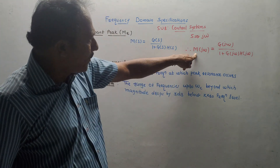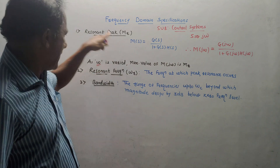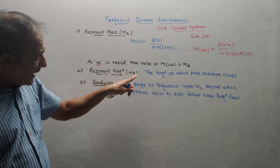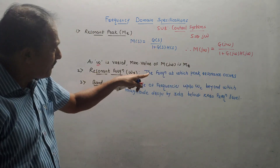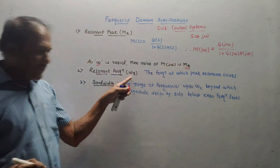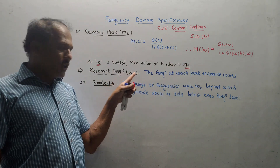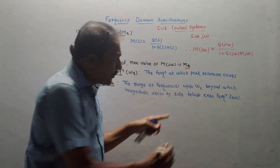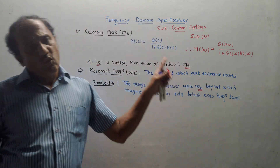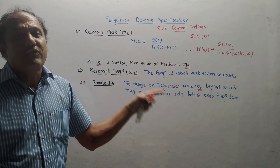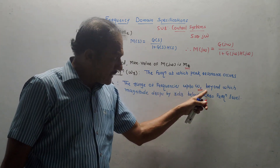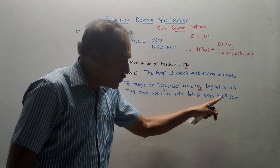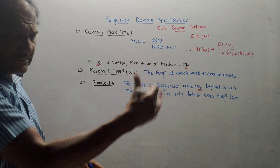Second is resonant frequency. It is the frequency omega at which peak resonance occurs — that means the frequency at which you are getting Mr. That corresponding frequency is called omega r, the resonant frequency. Third is the bandwidth. It is the range of frequency up to omega c. Omega c is called the cutoff frequency. The range of frequency up to the cutoff frequency, beyond which the magnitude drops by 3dB below the 0 frequency level.